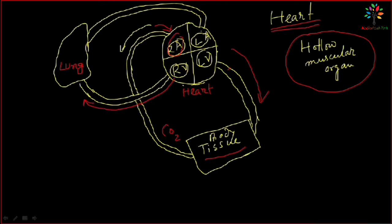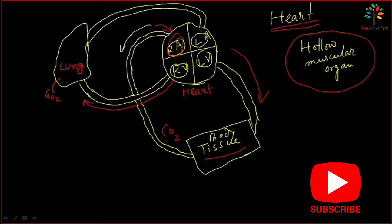That means there will be gas exchange — carbon dioxide will be passing to the lungs and from the lungs fresh oxygen will be coming into the blood. So blood will again get oxygenated and it will reach the heart. Again the heart will pump that oxygenated blood into all the tissues of the body.